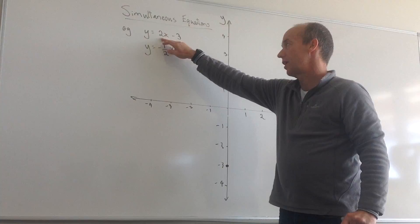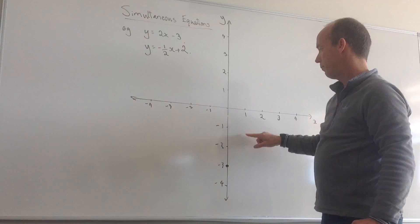It's going to have a slope of 2. So if I went across by 1, it would go up by 2. I could get a second point at 1, -1.